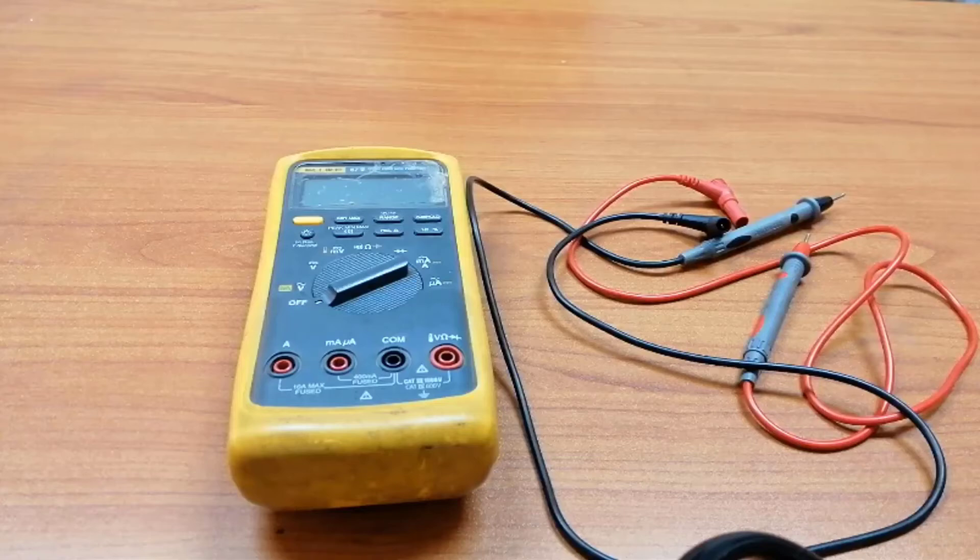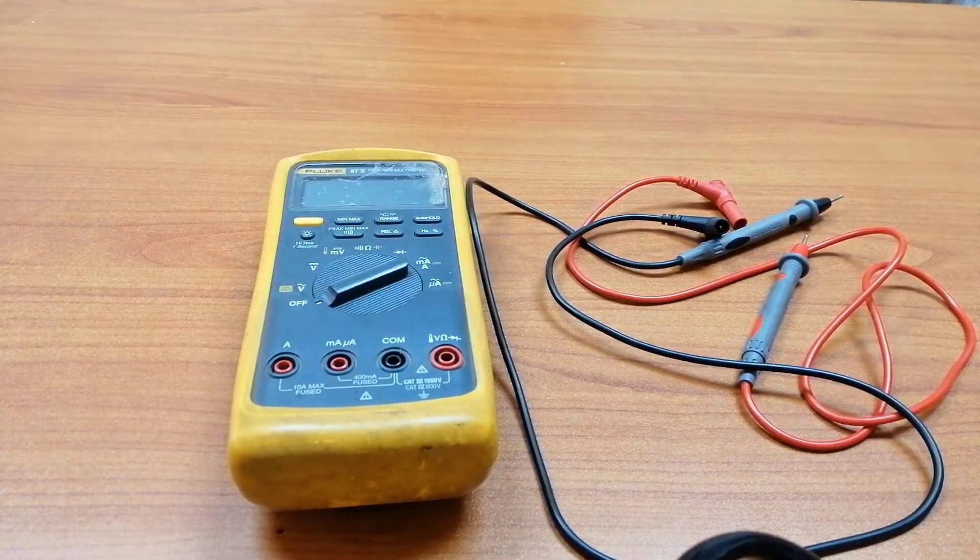As we all know, measuring devices are used to measure electric quantities like current, voltage, and resistance. The most popular measuring device is the multimeter or avometer.